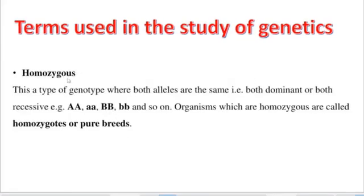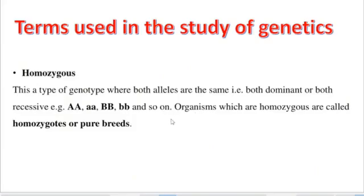We now look at homozygous. Homo means same. Homozygous refers to the type of genotype where both alleles are the same — for example, both dominant alleles (capital AA or capital BB) or both recessive alleles (small aa or small bb). Organisms that are homozygous are also called pure breeds because they have a pure genotype.